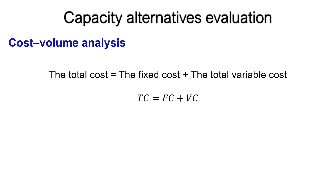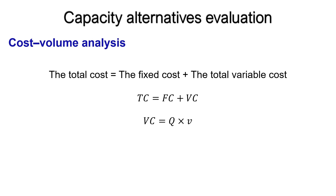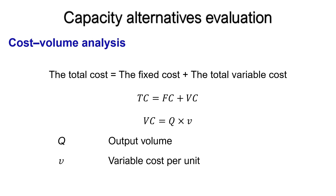That can be mathematically expressed as: TC = FC + VC, where TC is the total cost, FC is the fixed cost, and VC is the total variable cost. The total variable cost can be calculated by the formula: VC = Q × V, where Q is the output volume and V is the variable cost per unit.